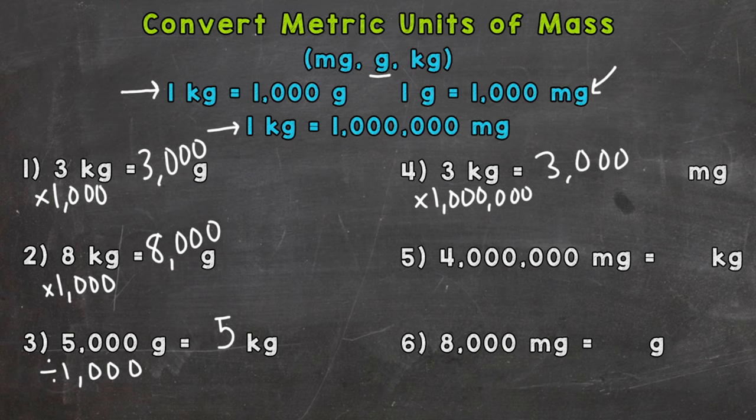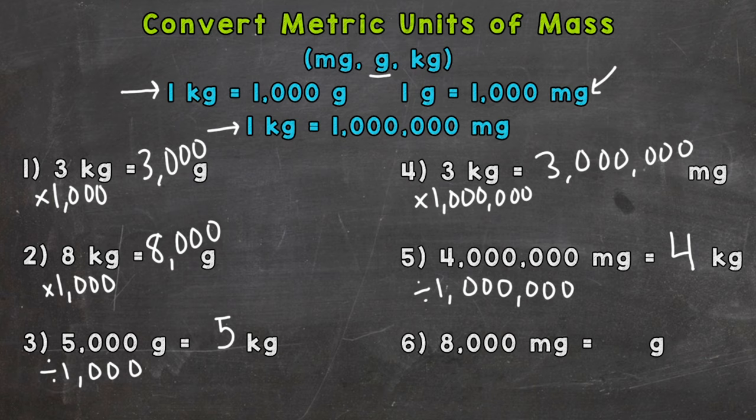Number five, we're going the opposite way — from milligrams to kilograms. So we need to split into groups of a million. Each one of those millions is a kilogram. So we need to do 4,000,000 divided by a million, and we end up with 4 kilograms. So 4,000,000 milligrams equals 4 kilograms.